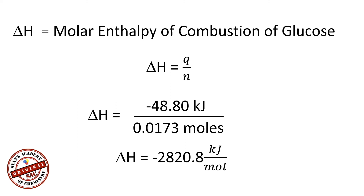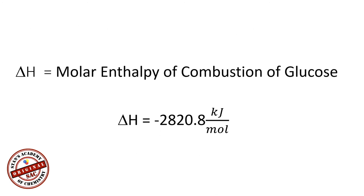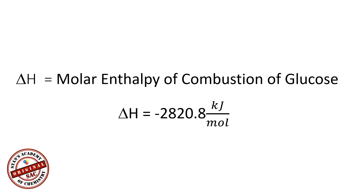Delta H equals −2820.80 kilojoules per mole. Delta H is negative because delta T was found to be negative (T_initial minus T_final), which satisfies the convention that energy released always has a negative value. So the molar enthalpy of combustion of glucose is delta H = −2820.80 kilojoules per mole. This value is based on the experiment conducted and may differ slightly from the theoretical value.